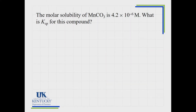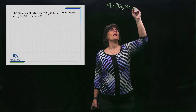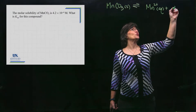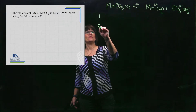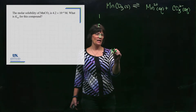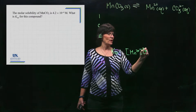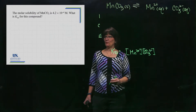Now we look at the reverse: given the molar solubility, find the KSP. The salt is MnCO₃ — manganese carbonate. Write the reaction with MnCO₃ as a solid on the left and the ions on the right. Manganese is Mn²⁺ and carbonate is CO₃²⁻. Leave room for an ICE table, then write the KSP expression: KSP = [Mn²⁺][CO₃²⁻].